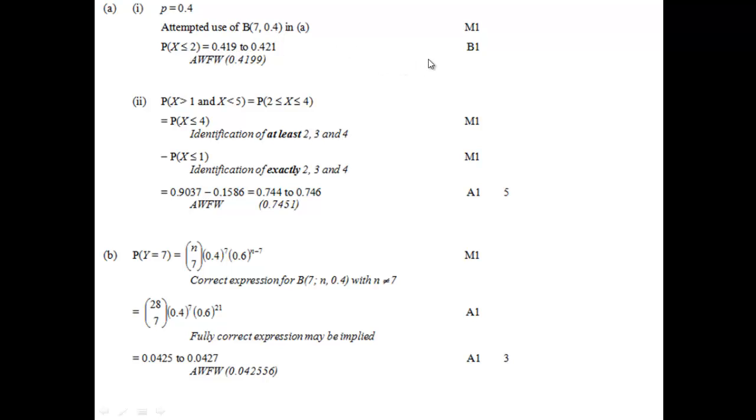Always write this bit out, but this is just a B mark here. So all you need is the right answer. And it's anything that falls within 0.419 to 0.421. And we got the answer 0.420, so we're fine with that. You'll see these method marks here for the next part do require the writing out of the probability that X is less than or equal to 4, minus the probability that X is less than or equal to 1. So write that part out to make sure you get the method marks and the following answer mark. For the answer mark, you need anything that falls within 0.744 to 0.746. And again, we got 0.745, so that's absolutely fine.